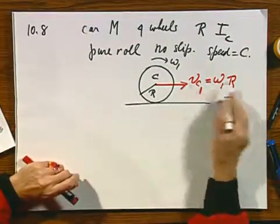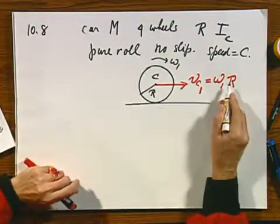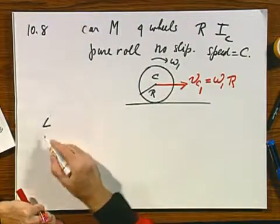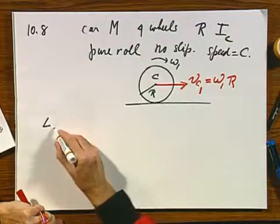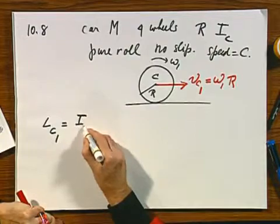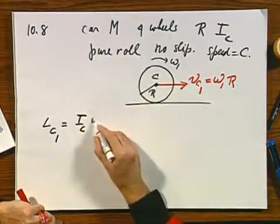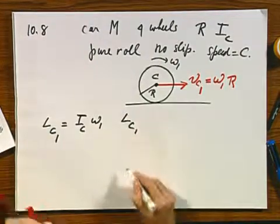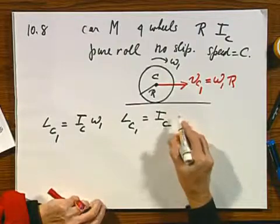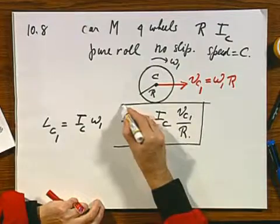This is only true because there is pure roll, otherwise this would not be true. What is the angular momentum? The angular momentum about point C, and I refer to moment one. That is I, moment of inertia about point C, about this axis, times omega one. And so L, at that moment in time, in the beginning, equals the moment of inertia, times V_C1, divided by R. So that is not too difficult.